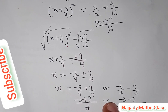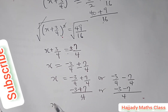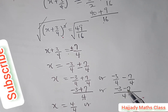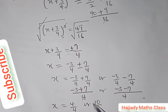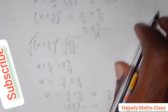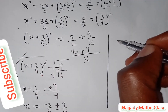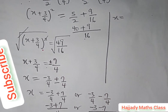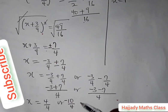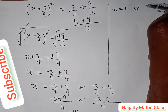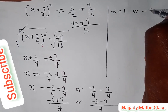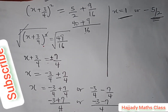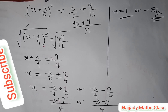The first value: -3 + 7 = 4, so x = 4/4 = 1. The second value: -3 - 7 = -10, so x = -10/4 = -5/2. Therefore our two answers are x = 1 or x = -5/2. Thank you very much — please don't forget to subscribe to the channel. See you in the next video!